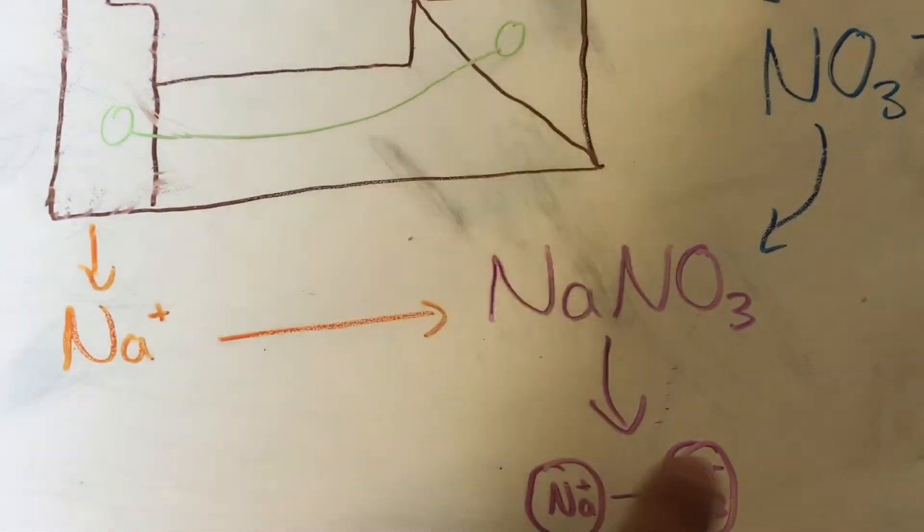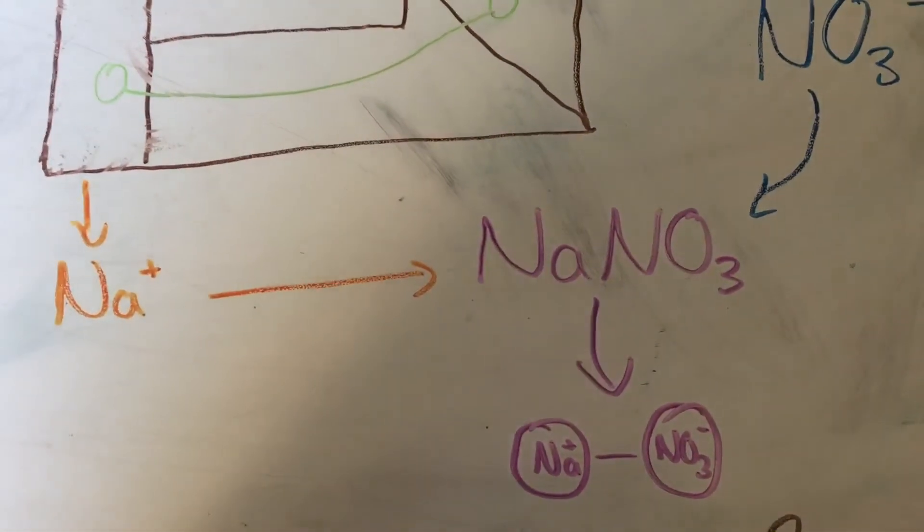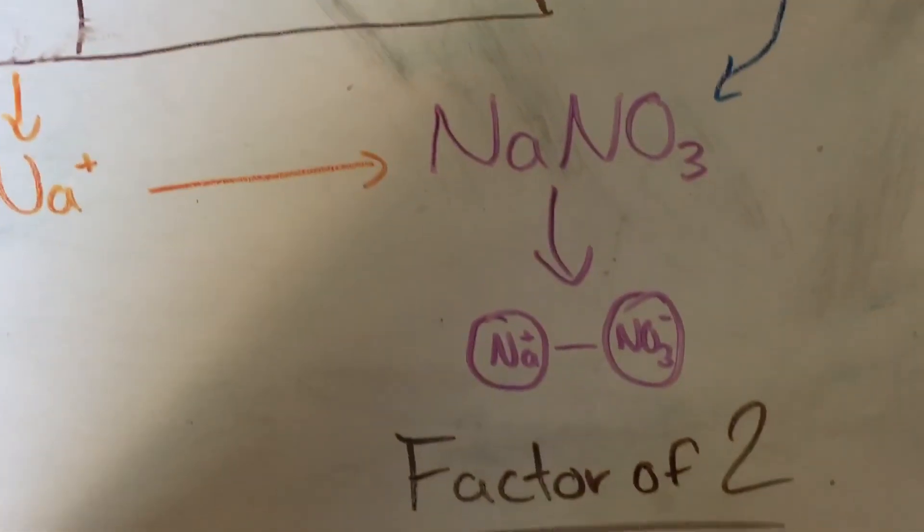Since we have two ions dissociated on each of our molecules we're going to have a Van't Hoff factor of two.